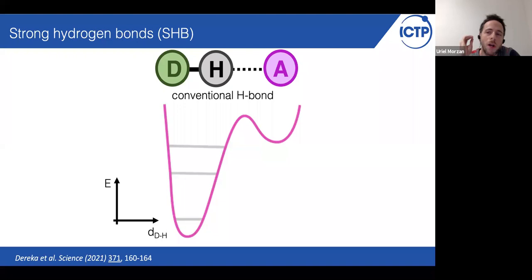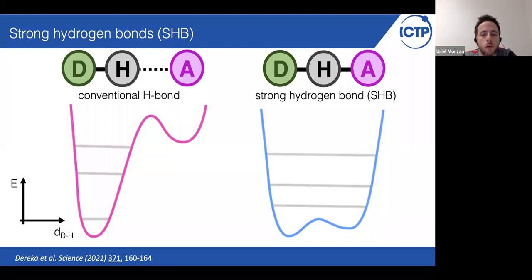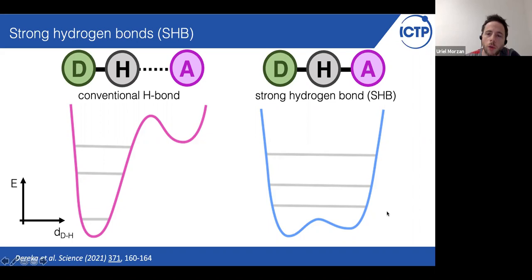We normally think about the hydrogen bonds with the sketch we have on the screen. This drawing represents a potential energy surface for a normal hydrogen bond where we have two minima, one deeper than the other, and several quantum vibrational levels inside the deepest minima. But this year, it was shown in the group of Tokmakov that the strongest hydrogen bonds that we can find in nature behave quite differently — they really behave more like a three-center covalent bond, because the zero point energy is above this double-well structure. So this really behaves as a broadened harmonic potential.